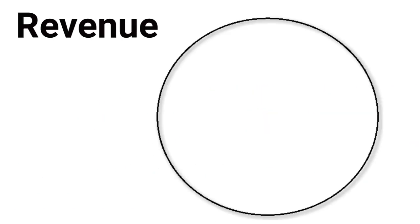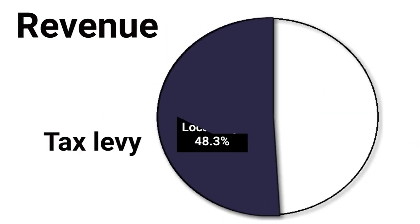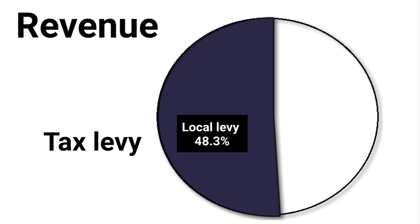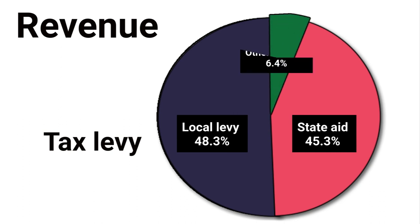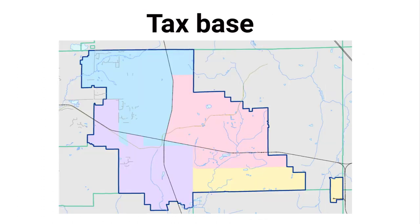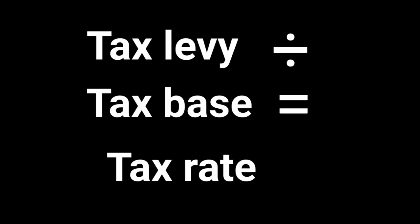First, some general terms. The tax levy is a portion of the budget that is funded through local property taxes. Local property taxes and state aid are the two most significant sources of revenue for the school district. Federal aid and local fees are other revenue sources. The tax base is the total value of all property in the district that is subject to local property taxes. The tax levy divided by the tax base is the tax rate, expressed in terms of dollars per thousand, or mill rate.